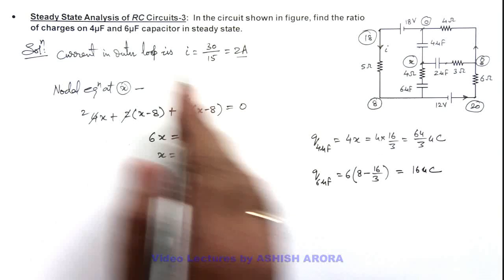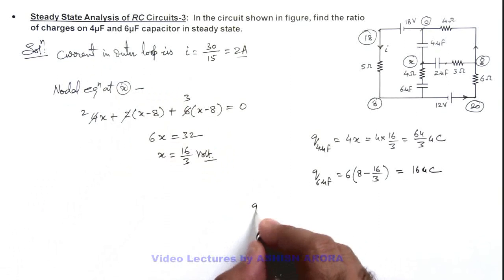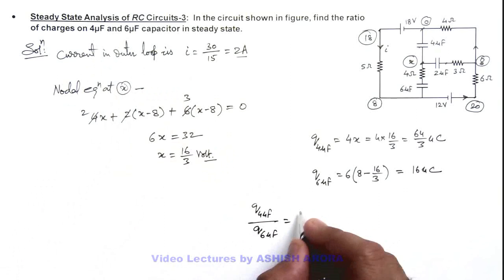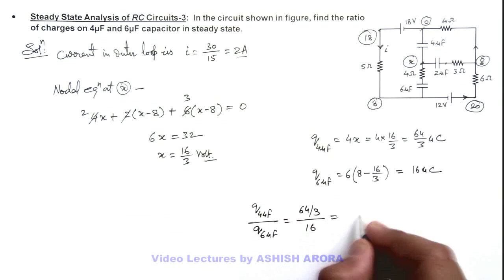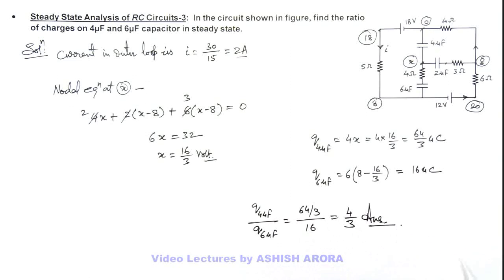So as we asked in the question, the ratio of charge on 4 microfarad to charge on 6 microfarad capacitor we can write as 64 by 3 divided by 16, so the result is 4 by 3. That is the answer for this problem.